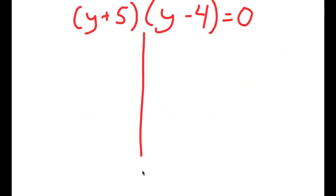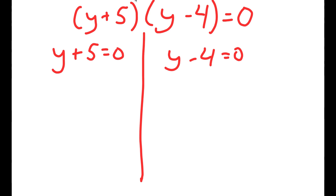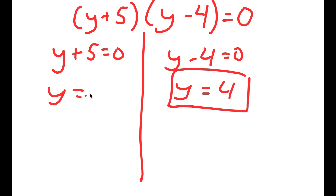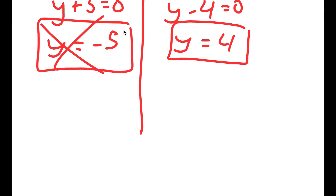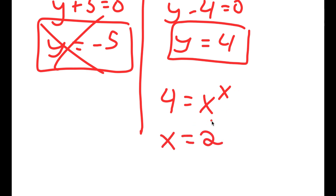This gives me two equations: y plus 5 equals 0, so y equals negative 5; and y minus 4 equals 0, so y equals 4. Because y equals negative 5 is negative, this is not possible — y equals x to the power of x, and you can't have that equal a negative number. So I get 4 equals x to the power of x. The only number that works is 2, since 2 to the power of 2 is 4. So x equals 2.